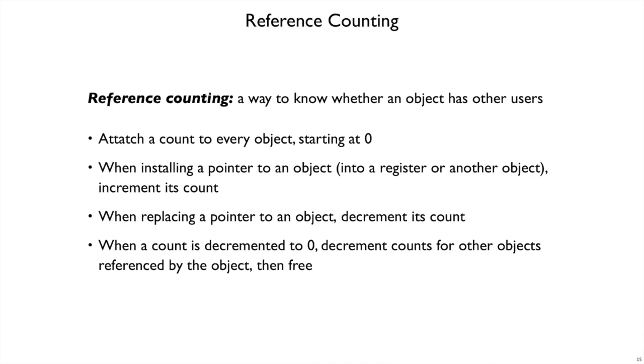When we free one object, that may release references to other objects, which will decrement their counts, which may decrement their counts to zero, and so then they will be freed. So there can be a chain reaction of frees due to a decrement.